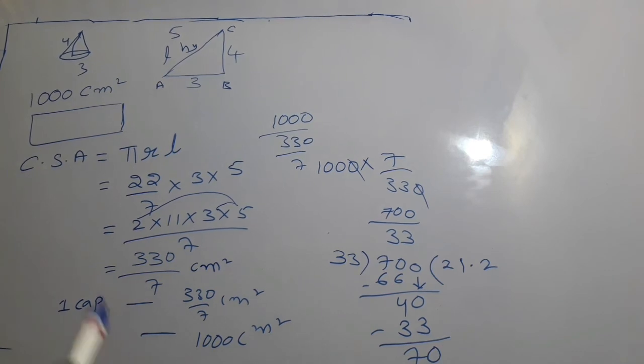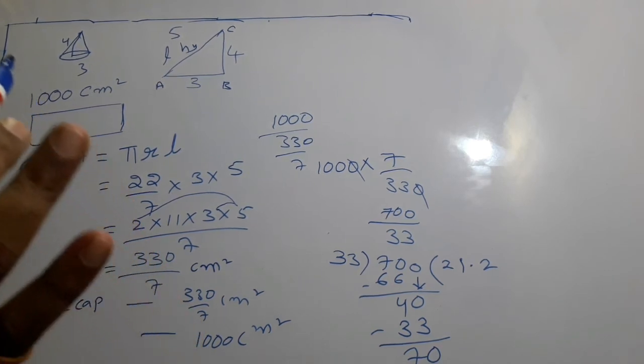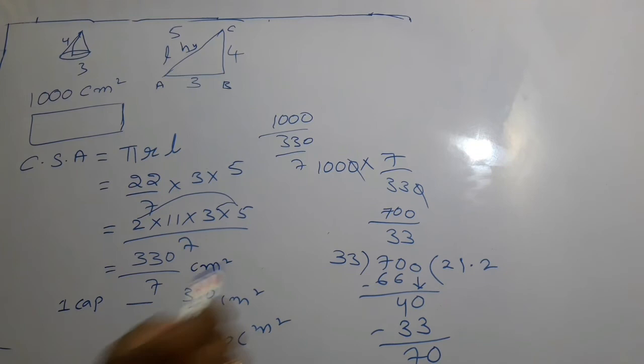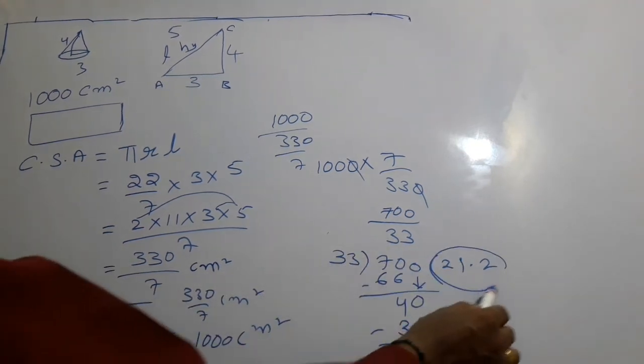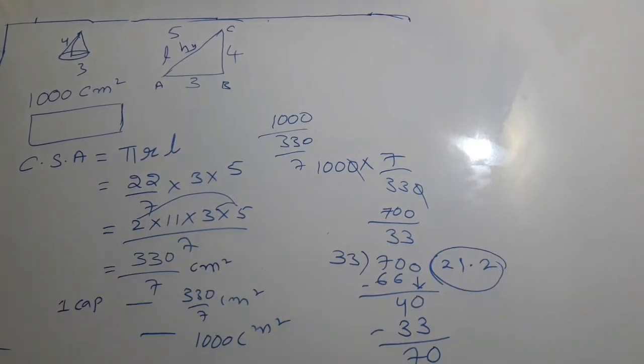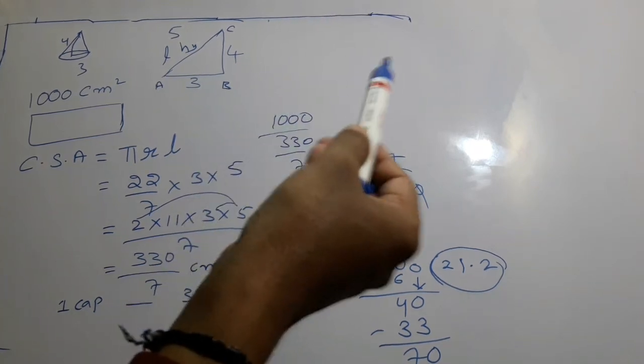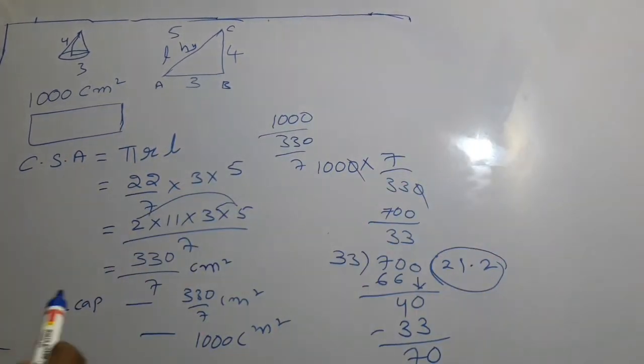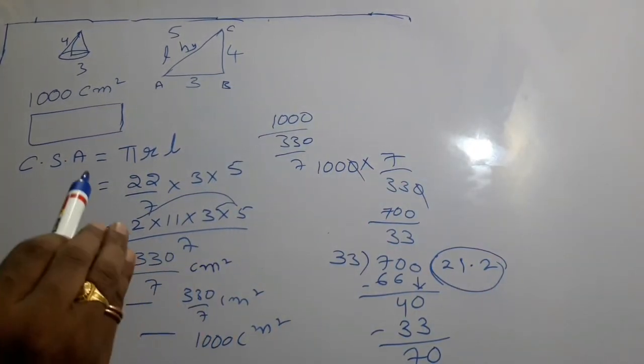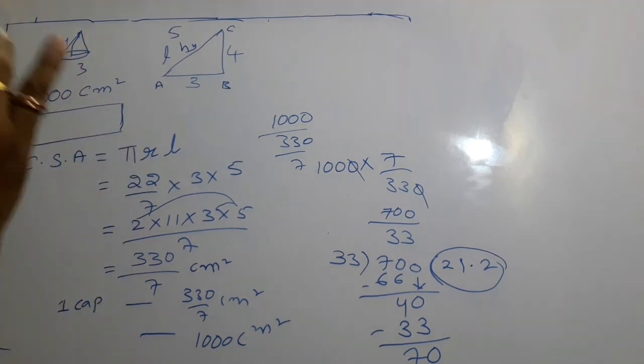So it is approximately 21 caps we can make. It is not a terminating decimal, it is a repeating decimal: 21.212121 and so on. So approximately we can make 21 caps from this 1000 square centimeter paper sheet.